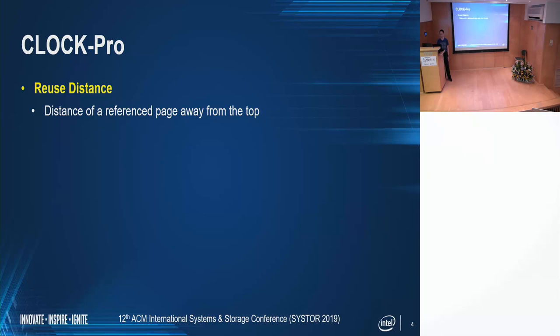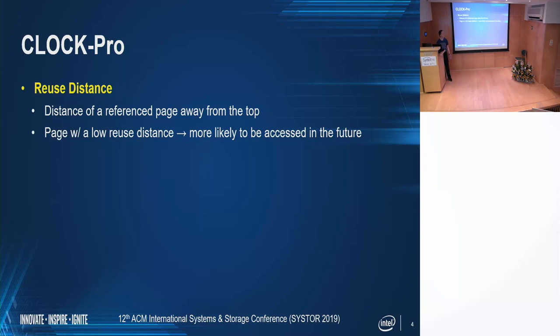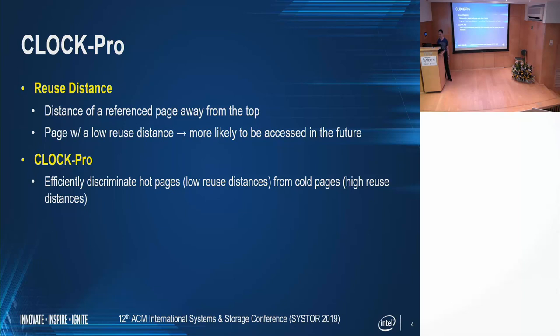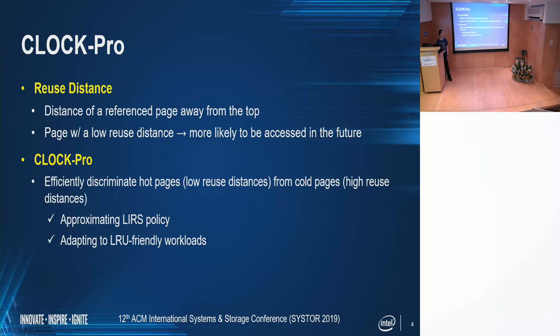CLOCK-Pro uses reuse distance — that is, the distance of a page away from the top — as the metric. It is assumed that if a page has a low reuse distance, then it is more likely to be accessed in the future. CLOCK-Pro efficiently discriminates hot pages with low reuse distances from cold pages with high reuse distance. It is an approximation to the state-of-the-art LIRS policy, but also incorporates an adaptive mechanism to fit for LRU-friendly workloads.